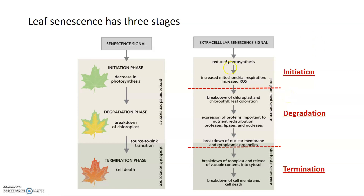On the right you can see more of the molecular mechanisms. In initiation, an extracellular senescence signal is received — this can be something biotic or something abiotic — and it leads to a reduction in photosynthesis. That reduction in photosynthesis means there is an increase in mitochondrial respiration, which as we talked about earlier increases the generation of reactive oxygen species.